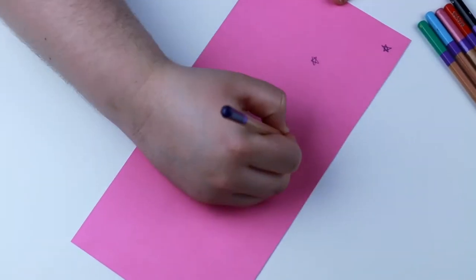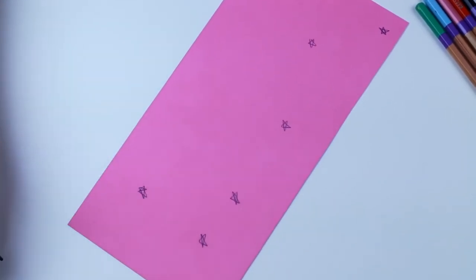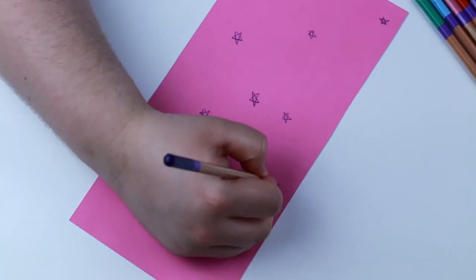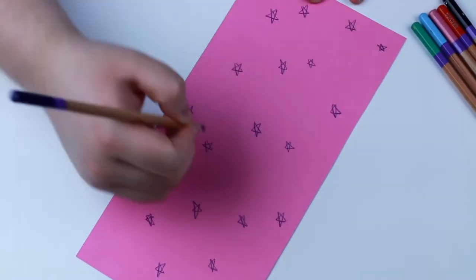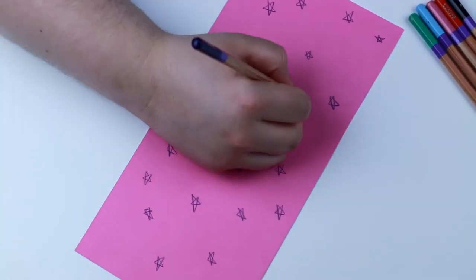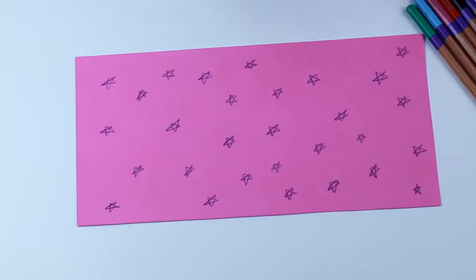For my pink piece of paper, I'm going to put stars on my can because way up high, above the earth, we have the stars looking down on us. So this can is going to have some stars on it. There we go. You can never have too many. Excellent.